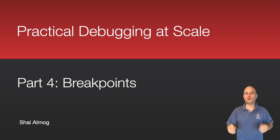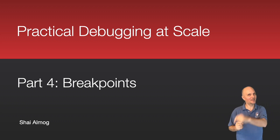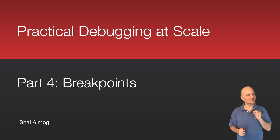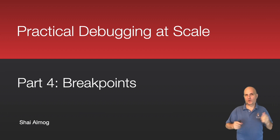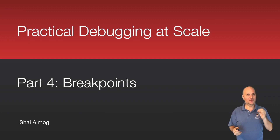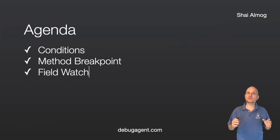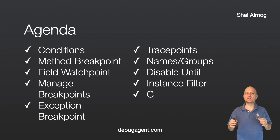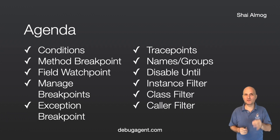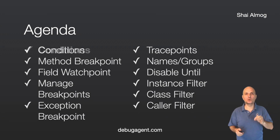Welcome back to the fourth part of debugging at scale, where we kick ass and take names — variable names. In this section, we discuss breakpoints, which are the most basic unit of work when debugging. But there's so much more to them than just breaking. We talked about the most basic breakpoints in our first installment. This time we'll dig a bit deeper and into some of the lesser known nuances.